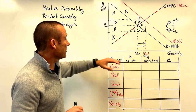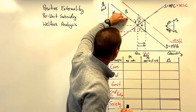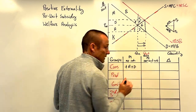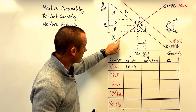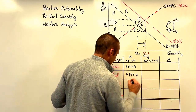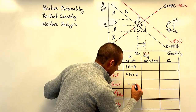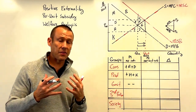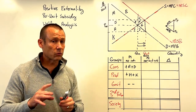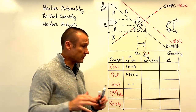Consumer with no intervention: we're going with price-market, at the intersection of supply and demand. Looking at the MPB curve, consumer surplus is plus A plus D. Producer with no intervention: going back to the MPC curve, producer surplus is plus H plus K. Government: they're not subsidizing anything, so just dashes — they're not involved. Third parties: they are being helped because this is a positive externality.